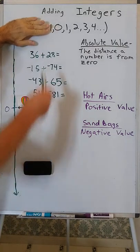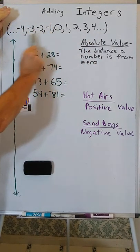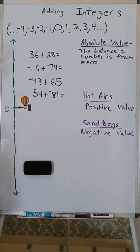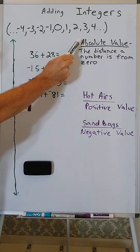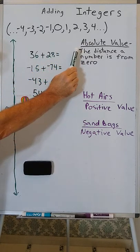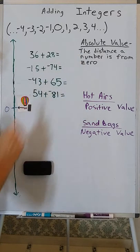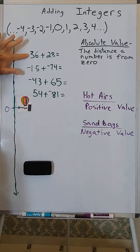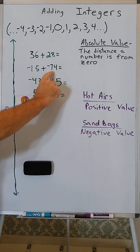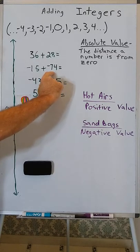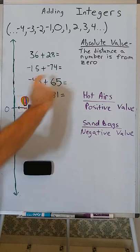Remember, integers are the whole numbers and their opposites. An important term used in this video is absolute value, which is the distance a value or number is from zero. The absolute value of 36 is 36 because 36 is 36 units from zero. The absolute value of negative 74 is 74 because it's 74 units away from zero.